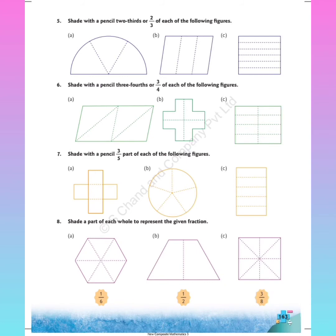In question 5, there are a total of 3 equal parts and the numerator is 2, so you need to shade 2 parts with pencil. Question 6: 3 upon 4 — total 4 parts, shade 3 parts. Question 7: 3 upon 5 — from 5 total parts, shade 3 parts. Question 8: a fraction is given and you shade accordingly — in the first figure 1 upon 6 means total 6 parts, shade 1 part. Similarly in question C, 3 upon 8 — shade 3 parts.